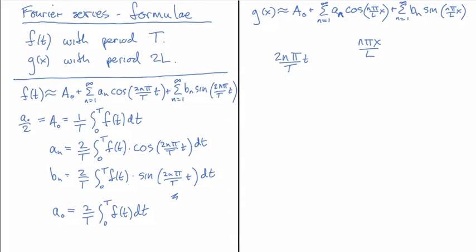Now in the x case, in this case, L is half the period, and in this case T was the full period. So in a way, what we have is you could put 2 in front of this and then put the full period down here.